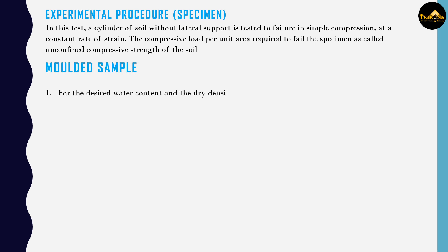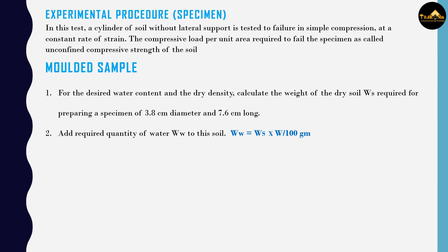Calculate the weight of the dry soil (Ws) required for preparing a specimen of 3.8 cm diameter and 7.6 cm long. Add required quantity of water (Ww) to the soil: Ww = Ws × water content / 100 grams. Mix the soil thoroughly with water.